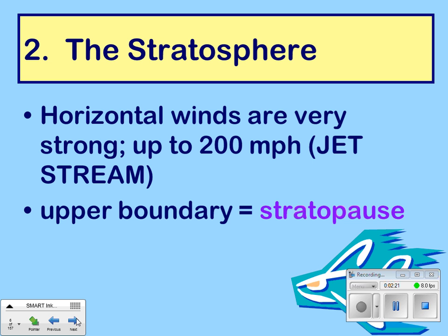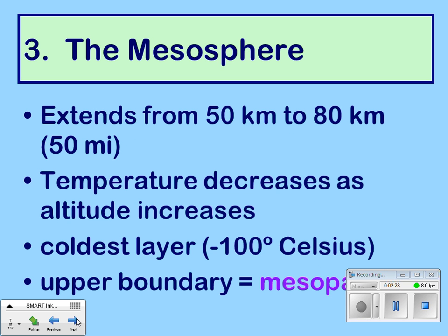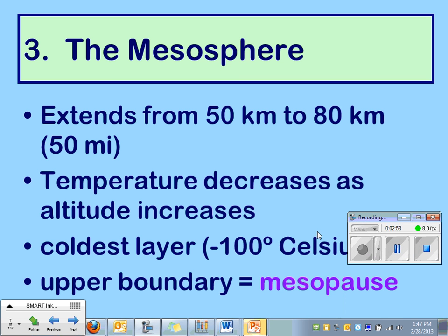Just like pausing a movie, the stratopause is the break between the stratosphere and the next layer. The mesosphere — meso meaning middle — is here in the middle of all the atmosphere layers. It extends from 50 kilometers to 80 kilometers, about 50 miles. Temperature decreases as altitude increases, the same as in the troposphere. It is the coldest layer at negative 100 degrees Celsius. The upper boundary is called the mesopause.